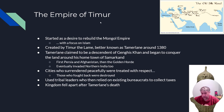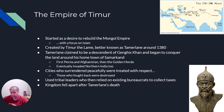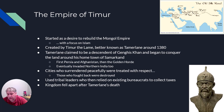A couple years later, born out of a desire to rebuild the Mongol Empire with a focus on Islam, this man named Timur the Lame — or Tamerlane — comes to power in the year 1380. He begins his quest for power by claiming he's a direct descendant of Genghis Khan and conquers land around his hometown of Samarkand.